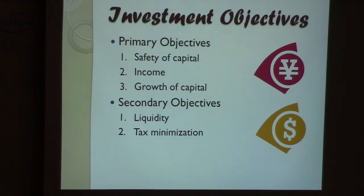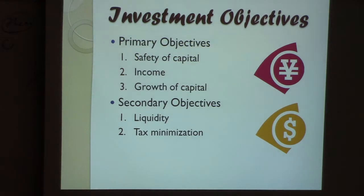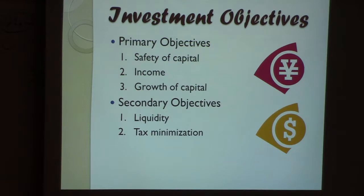The second objective is income. Many people invest to earn an income — perhaps you've saved a couple hundred thousand dollars and invest in different types of assets, like real estate, to earn income. This income may supplement other income or be your only income. The third objective is growth of capital: you invest money into different assets hoping they gain in value over time.